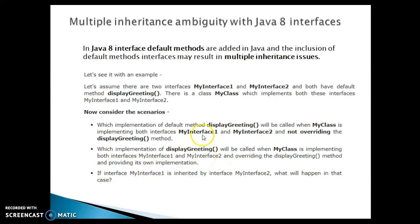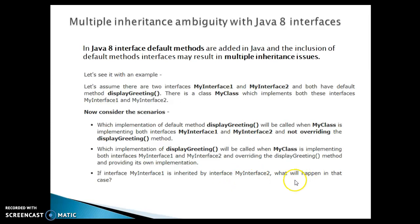So if the display greeting method is available in both interfaces, and my class implements both and also overrides that method, then which method is going to be called — that's another scenario. And finally, if my interface one is inherited by my interface two and the display greeting method is available in both interfaces, then how my class is going to manage in that case — so all those kinds of scenarios we have.